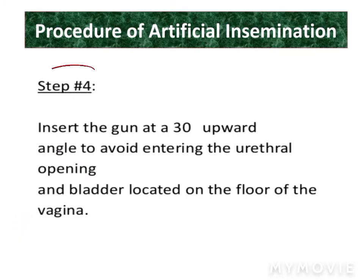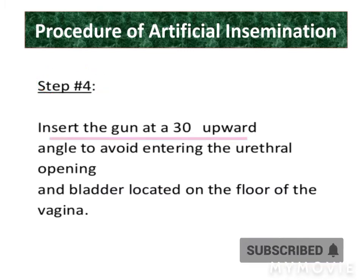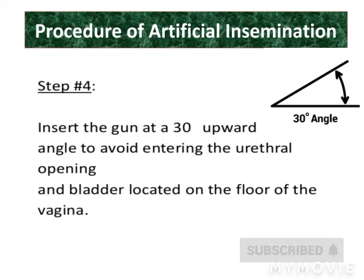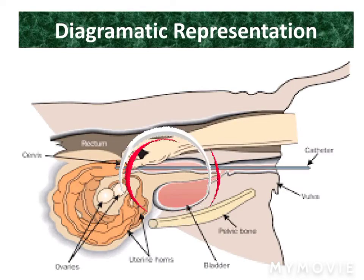In step 4, insert the gun at a 30-degree upward angle to avoid entering the urethral opening or bladder, which is located in the floor of the vagina, as shown in the diagram.